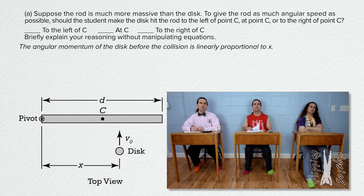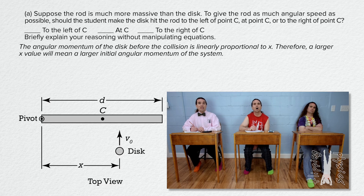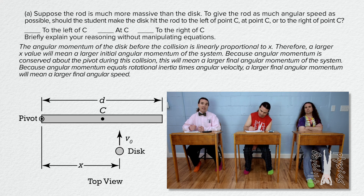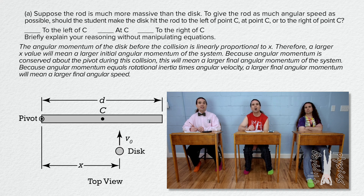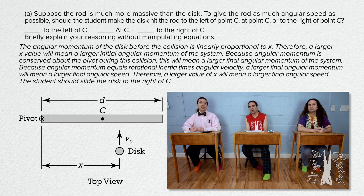Billy, could you please answer part A? The angular momentum of the disk before the collision is linearly proportional to the distance the disk strikes the rod from the axis of rotation of the rod, and that distance is x. Therefore, a larger x value will mean a larger initial angular momentum of the system. Because angular momentum is conserved about the pivot during the collision, this will mean a larger final angular momentum of the system. Because angular momentum equals rotational inertia times angular velocity, a larger final angular momentum will mean a larger final angular speed. Therefore, the student should slide the disk to the right of C.